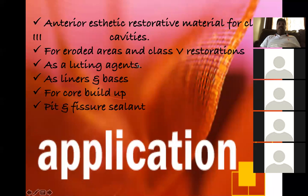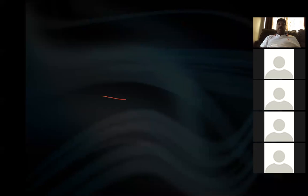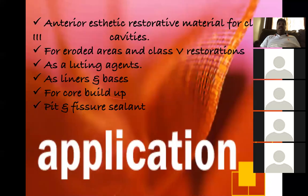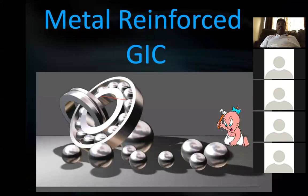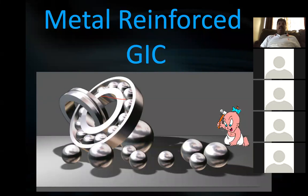GAC is mainly used in Class 5 cavities and sometimes Class 1, Class 3, and Class 4. Now we come to the modifications of GAC. There are two modifications: metal modified and resin modified.